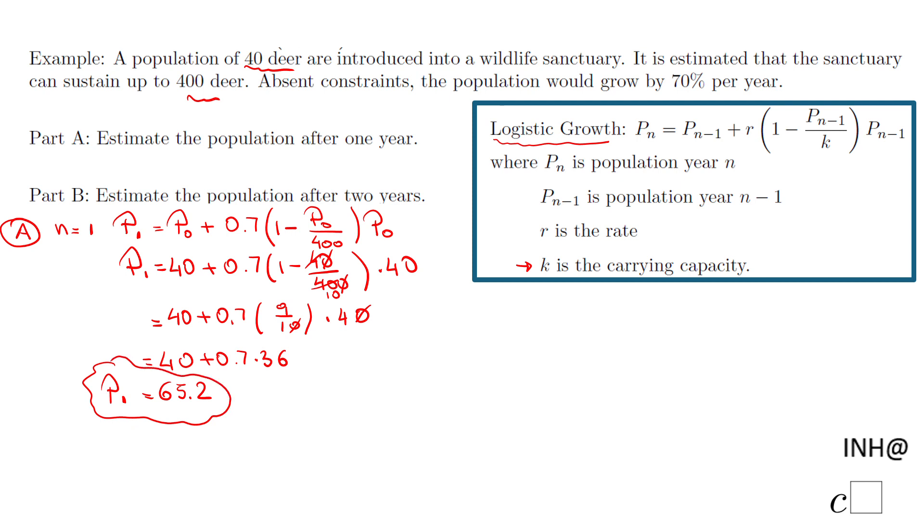Let's move to the second part, Part B, where we have to estimate the population after two years. So the formula is going to look very similar, n is 2 now, and P sub 2 will be